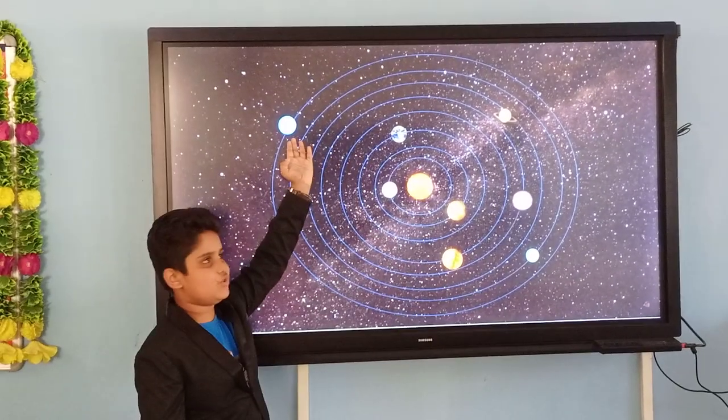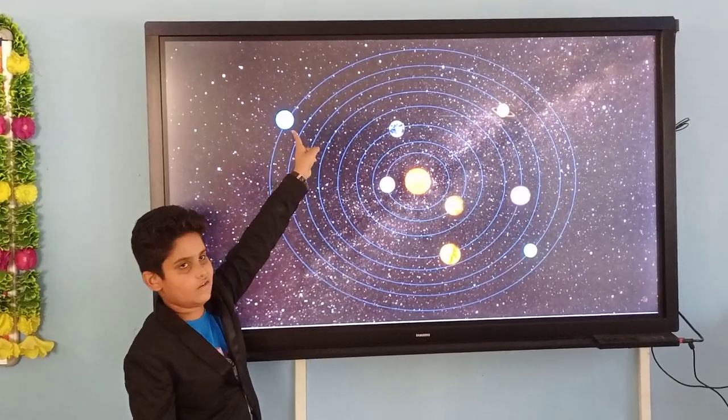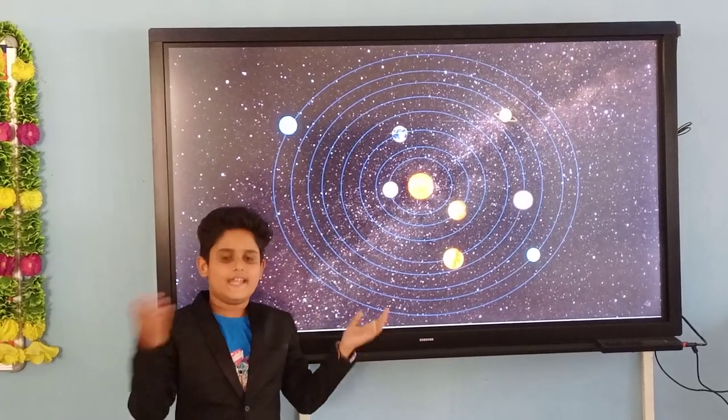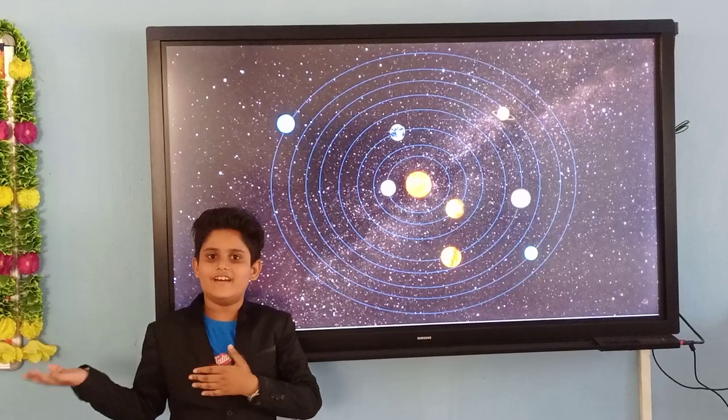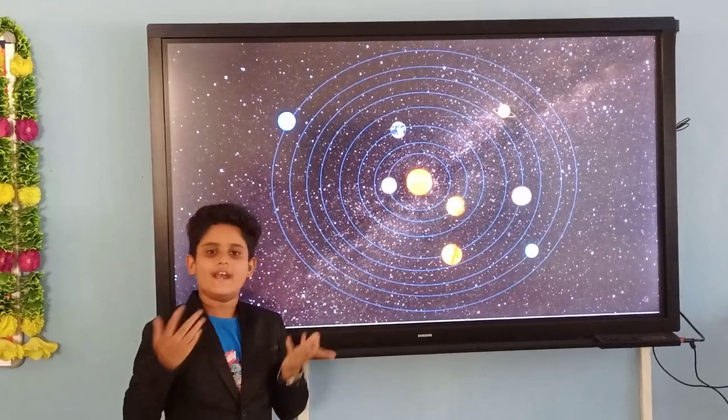And last is Neptune. This is the last planet in the solar system. It is a large planet. It is huge green in color, and it is surrounded by clouds.